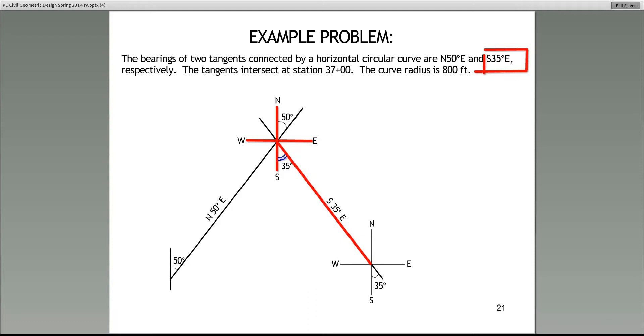Now, then we can use these different angles and come up with some relationships. What else do we know about this problem? This problem tells us the tangents intersect at station 37 plus 00. Now, the point where the tangents intersect, what did I tell you it's called? You're correct, PI, which stands for the point of intersection.